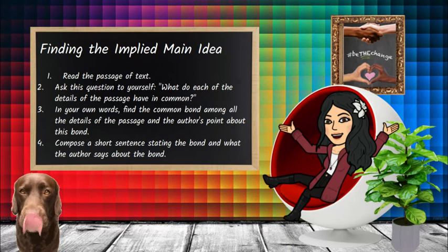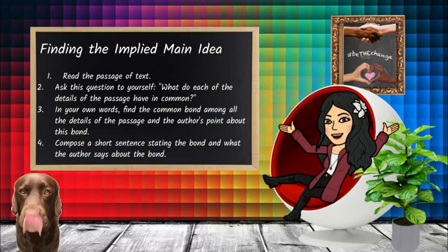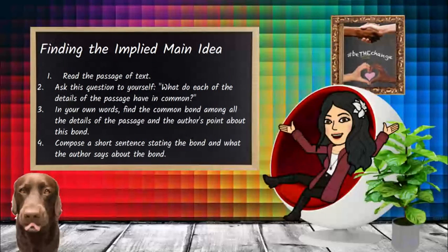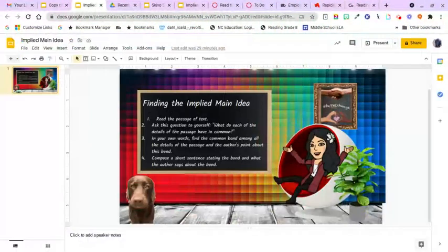Then write a short sentence stating the bond — what they have in common. For example: 'This family has three dogs.' That is the main idea. Or: 'The woman's different colored chickens lay different colored eggs.' Again, a short sentence, but it explains the main idea. Make sure you are writing a short sentence that includes the pertinent, important information in your main idea explanation. This is not rocket science, ladies and gentlemen — you should be able to do this.